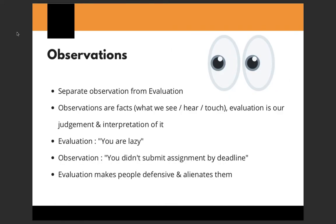Observations are the facts — what we see, hear, and touch. Evaluation is our judgment and interpretation of those facts. What happens is we mix the two — or sometimes we are mostly judging when we talk about people. We might say 'you are lazy,' 'you are dishonest,' or 'you are sad.' These are judgments of the person, not observations. An example of a true observation would be: 'You did not submit the assignment by the deadline yesterday' — that is a fact with no interpretation.